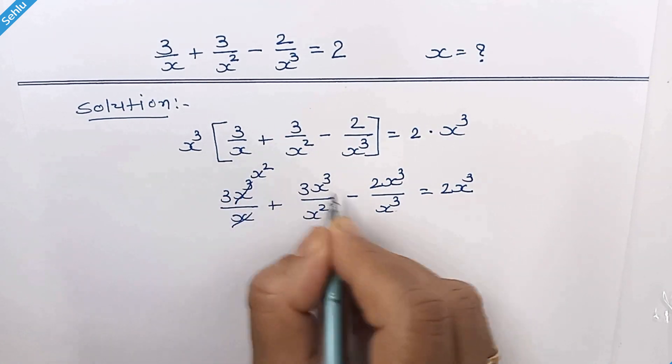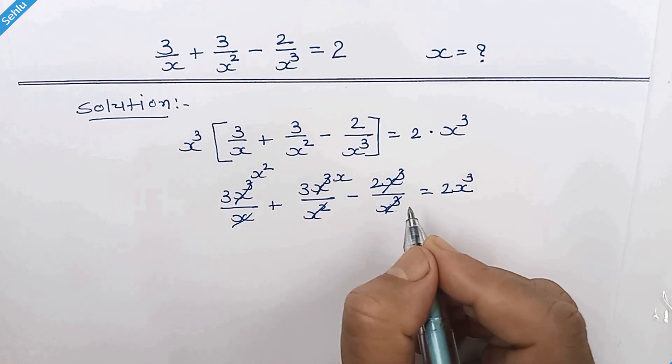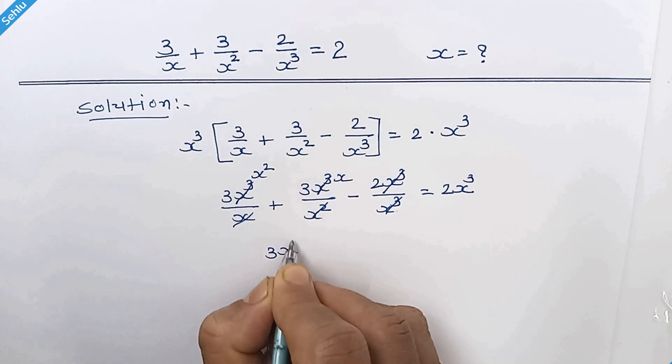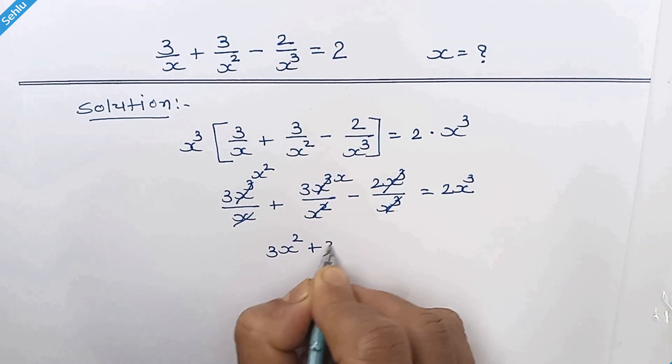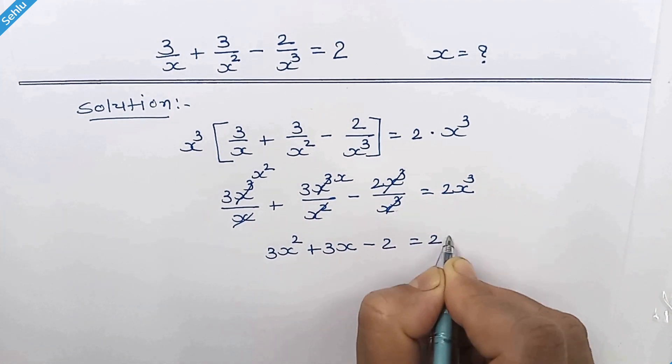So here we have x square, here we have x and these two will cancel each other. Now we have 3x square plus 3x minus 2 is equal to 2x cube.